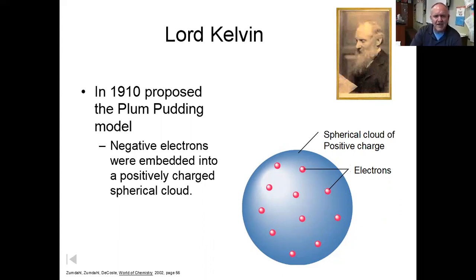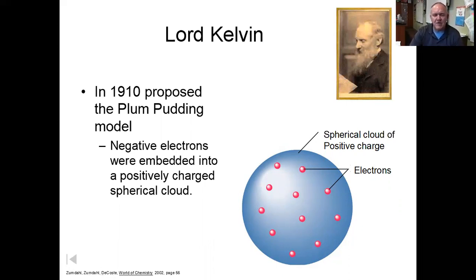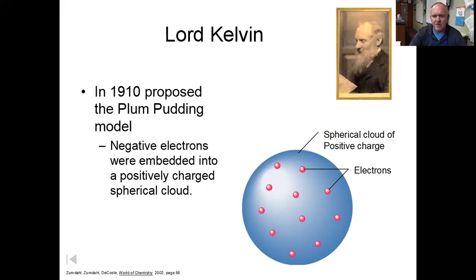In this model there are no protons and no neutrons — all we have are electrons. The atom itself, the whole sphere, is overall positive, and all the little electrons are embedded inside that positive cloud, giving it an overall balance of zero net charge.